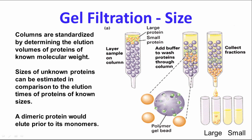Gel filtration separates proteins by size. Large ones travel between the beads while small ones spend time inside the beads, so the small ones come out last and the large ones come out first. For purification this is not a very useful technique because many proteins have very similar sizes and resolution is not great unless you have extremely long columns. However, you can calibrate long columns with proteins of known molecular weight and estimate the molecular weight of your protein — for example, a dimeric protein would elute prior to its monomers.